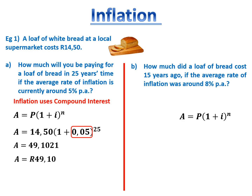In this example, R14.50 is what it is worth now — we don't know where it started. Remember, P is the principal, the initial value — it's where it started. So in this example, we need to work out the P value. Our interest rate is 8% per annum, so we're going to substitute in 0.08. Now we need to get P on its own, so we're going to divide R14.50 by the whole of the right-hand side except the P value.